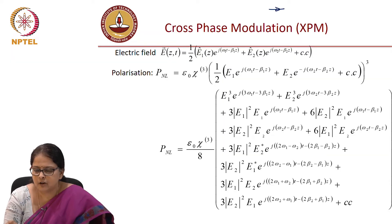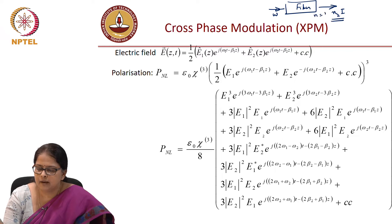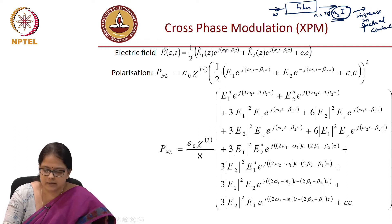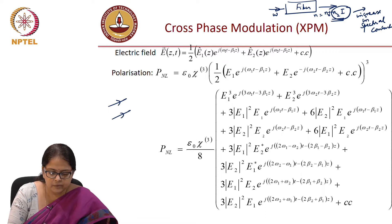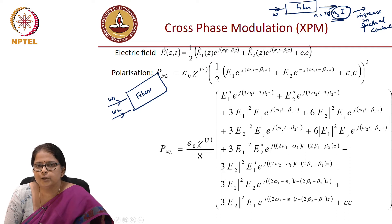In self-phase modulation, we talked about a frequency propagating through the fiber giving rise to a non-linear refractive index, where n became n-naught plus n₂I, resulting in an increase in the spectral content of omega itself. Now, what happens if you go in with two frequencies — omega 1 and omega 2 — combined and propagating through the fiber? We have simultaneous transmission of two frequencies through the fiber.